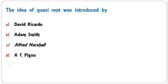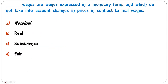The idea of quasi-rent was introduced by Alfred Marshall. C is the correct answer. Quasi-rent was given by Marshall — this is a fact-based question.